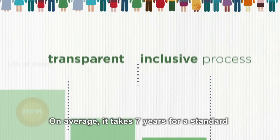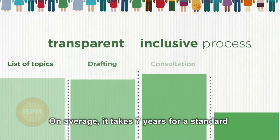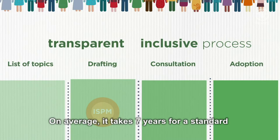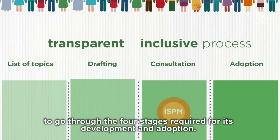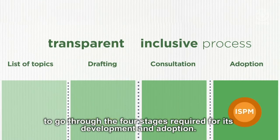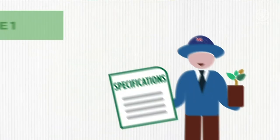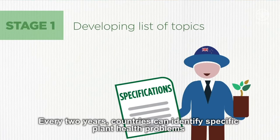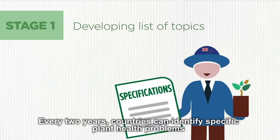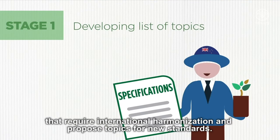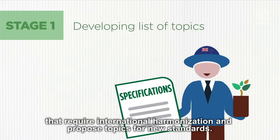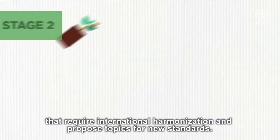On average, it takes seven years for a standard to go through the four stages required for its development and adoption. Every two years, countries can identify specific plant health problems that require international harmonisation and propose topics for new standards.